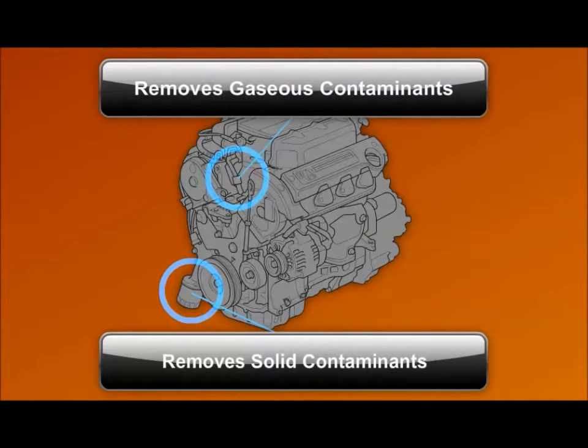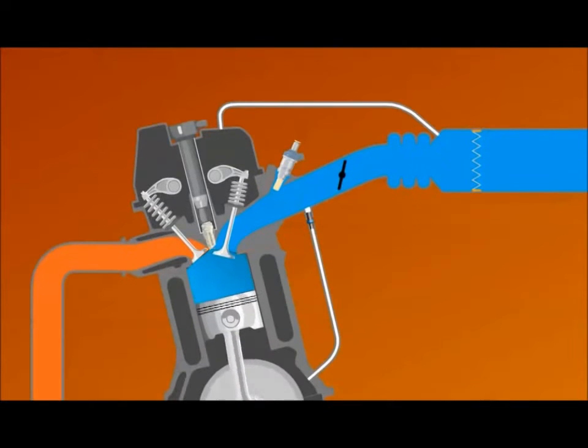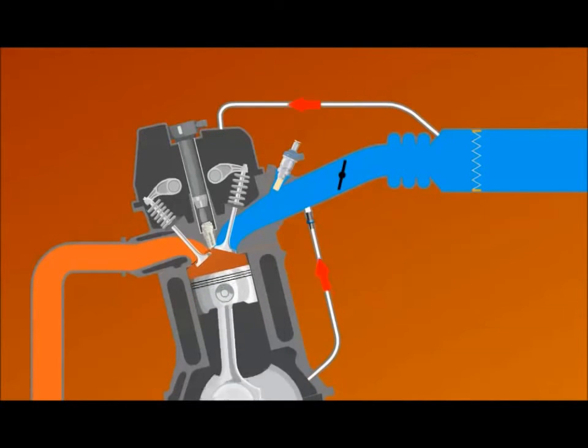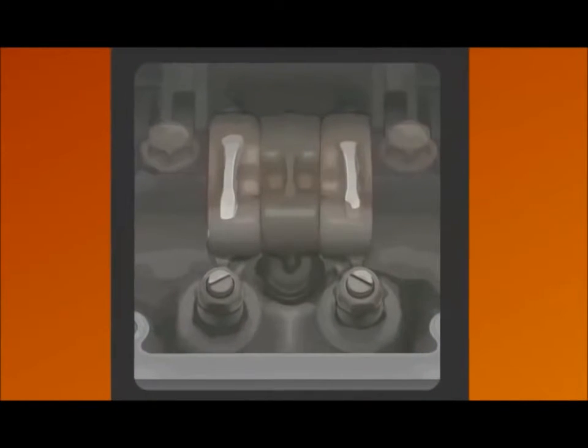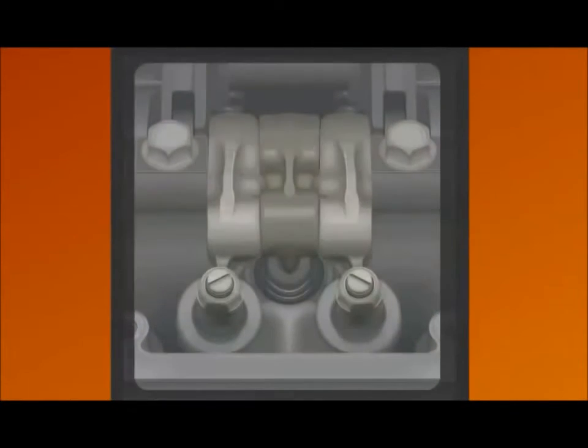While the oil filter removes solid contaminants from the engine crankcase, the positive crankcase ventilation, or PCV system, removes gaseous contaminants. These contaminants include combustion gases that leak past the piston rings and water vapor formed through condensation. The PCV system draws in filtered air and uses engine vacuum to send crankcase vapors into the combustion chamber. This reduces sludge formation and helps increase engine oil life.